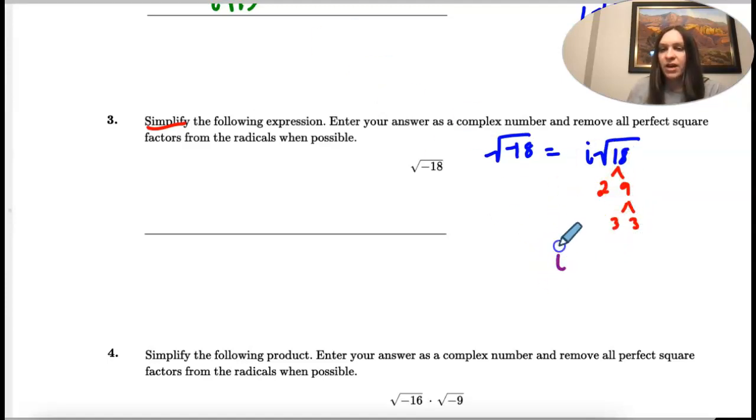So I have i and then under my radical 2 times 3 times 3. I have a pair of threes.